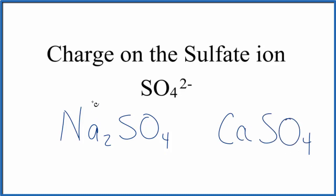If we look at sodium, that's in group 1 on the periodic table. So that's a 1+. We have two of them. So 2 times 1 plus is 2+. This whole sulfate ion has to be 2- for those charges to balance out.